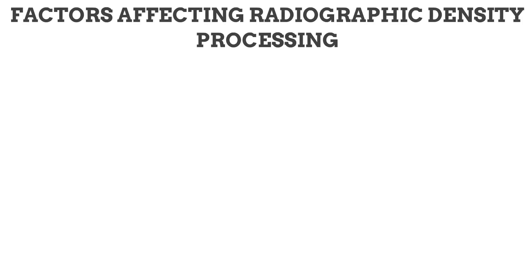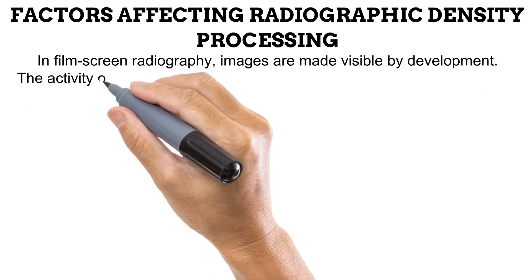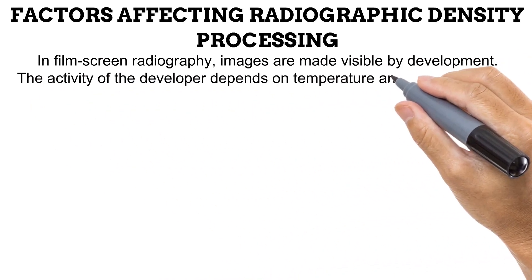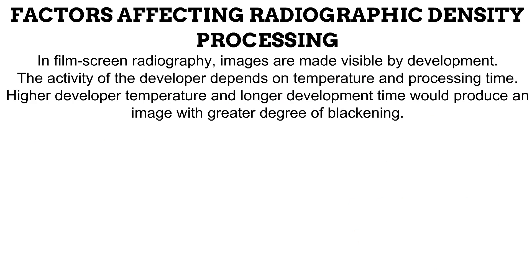The final factor affecting radiographic density is processing, which also applies only to film screen radiography. Images are made visible by a process called development. The activity of the chemical responsible for development depends on its temperature and the time spent developing. High development temperatures and long development times produce images with a greater degree of blackening.